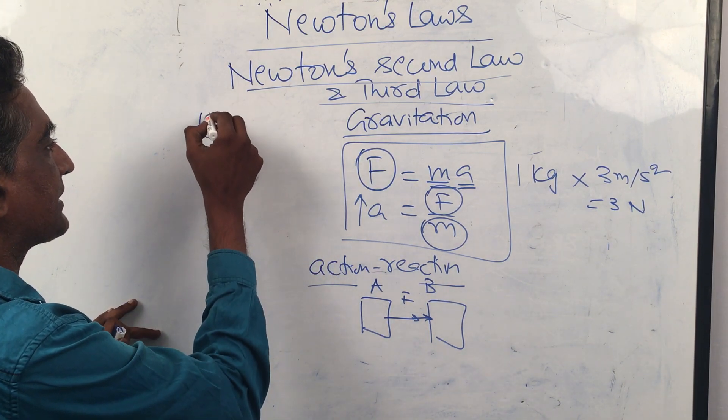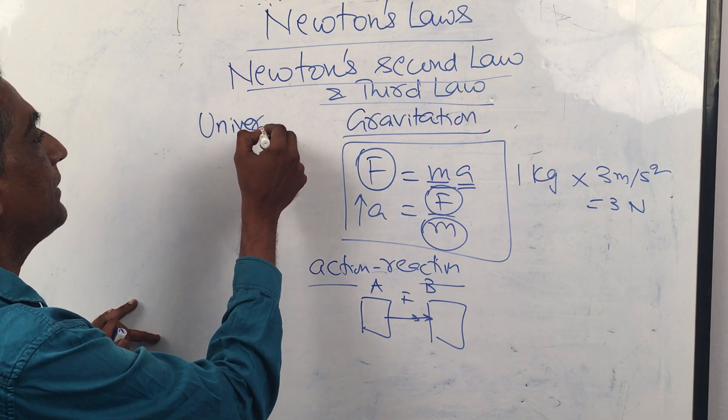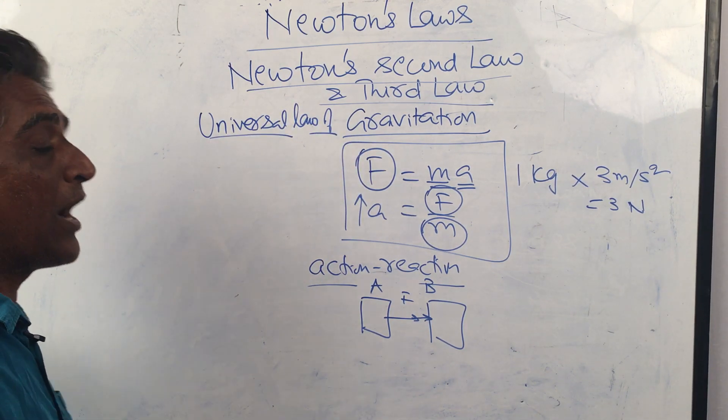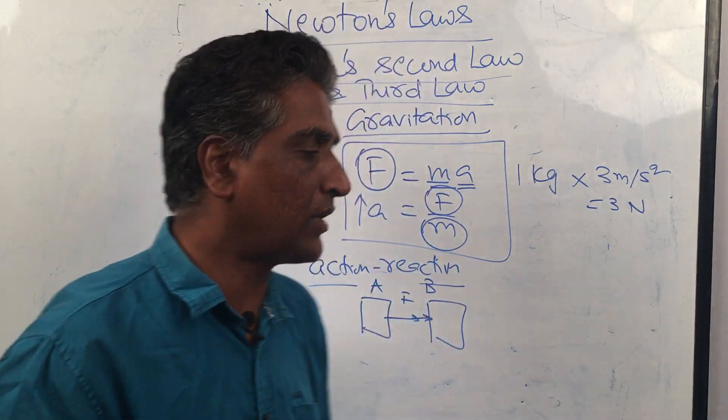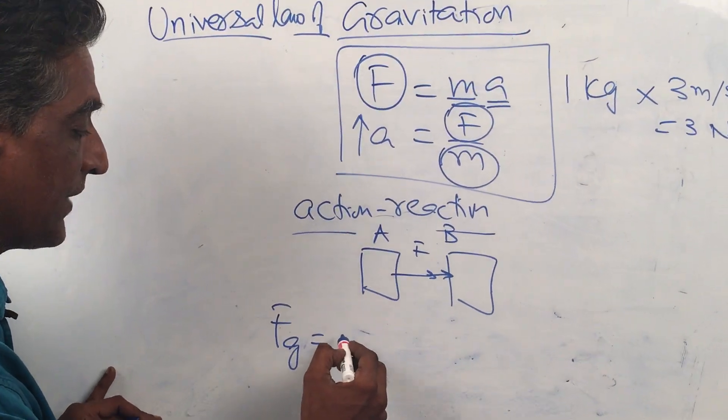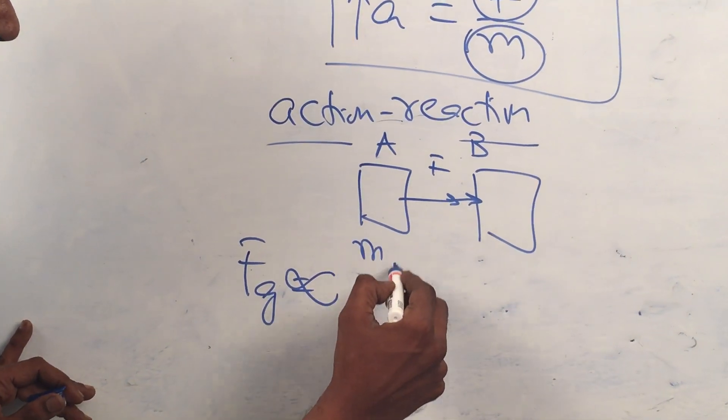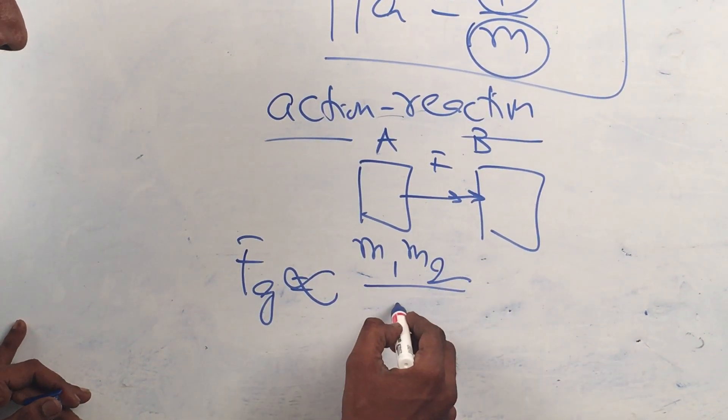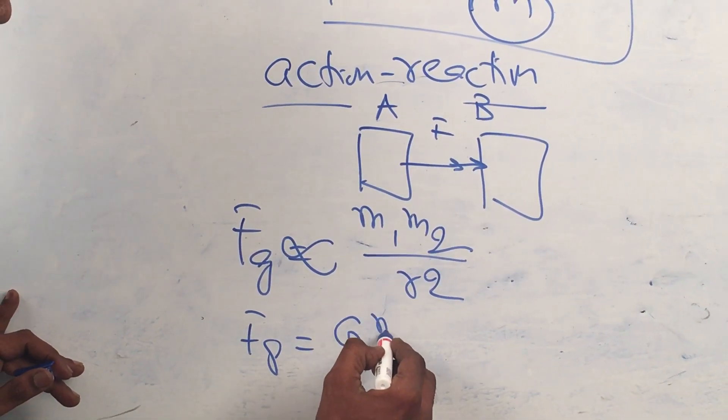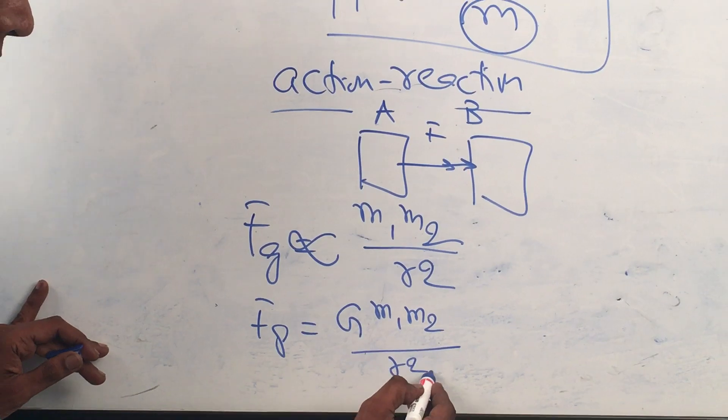Now we come to Newton himself who discovered the universal law of gravitation. The universal law of gravitation says that the force of gravity is directly proportional to mass M1, M2 by R square. So force of gravity is equal to G M1 M2 by R square.